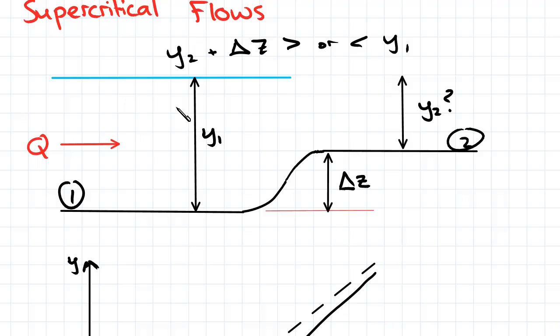...then we know that since y2 is the height above the raised bed, so the raised bed has a delta z which is positive, then the overall height of the water surface with respect to the initial bed is y2 plus delta z. And because y2 is already larger than y1, then y2 plus delta z is obviously larger than y1.